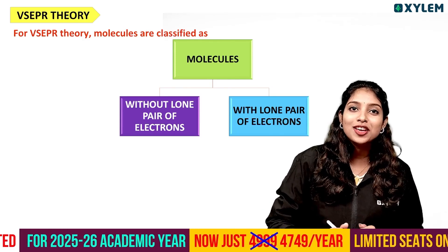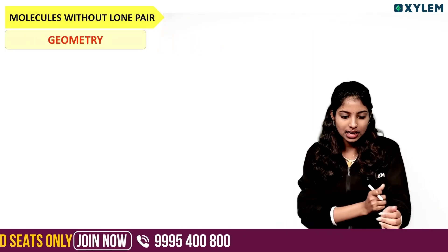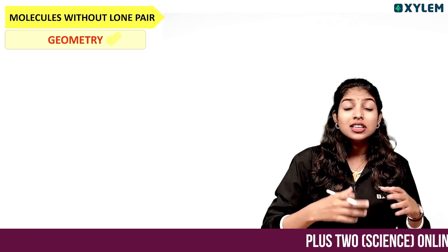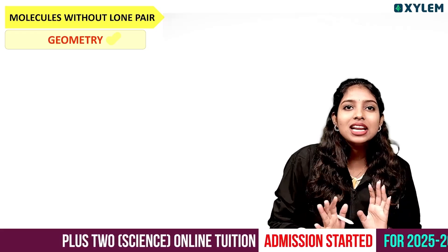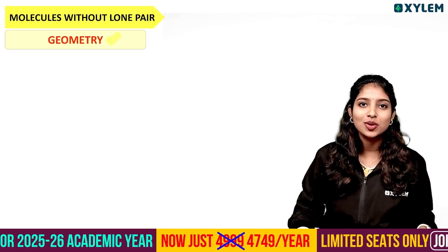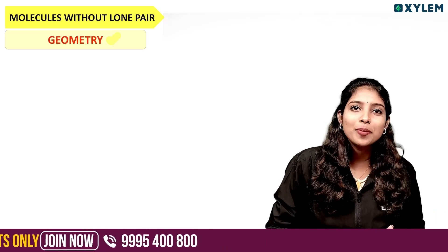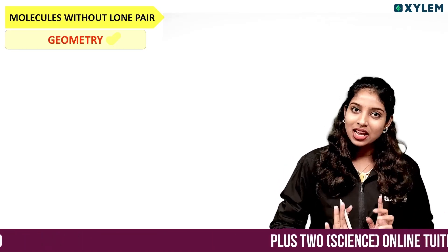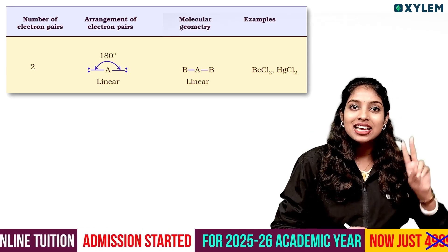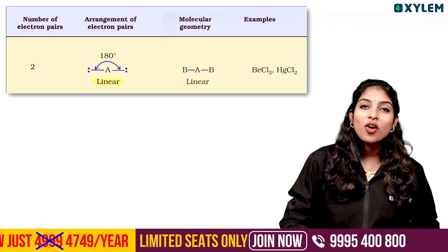The VSEPR theory classifies molecules into two categories: molecules without lone pairs and molecules with lone pairs. Looking at geometry: with two bond pairs, we get linear geometry with a bond angle of 180 degrees.